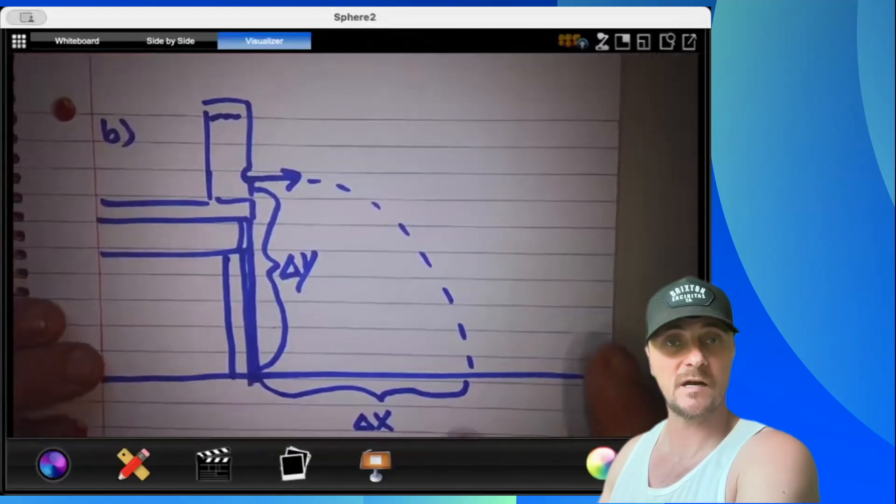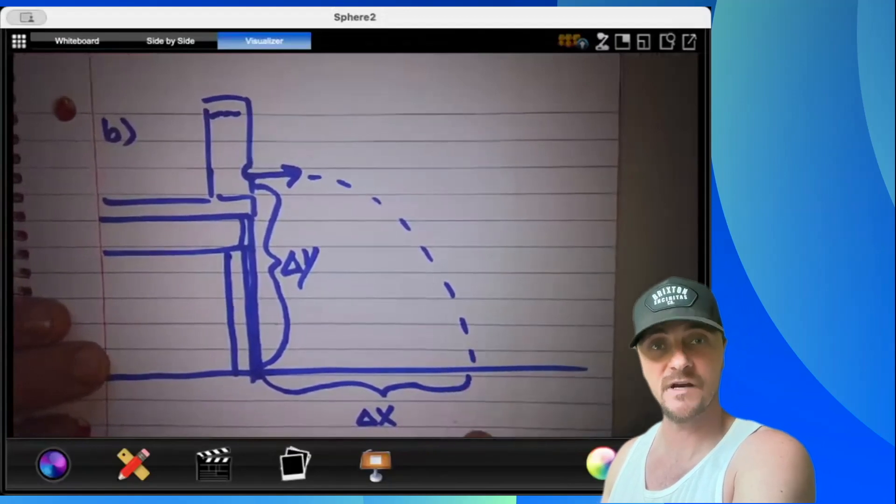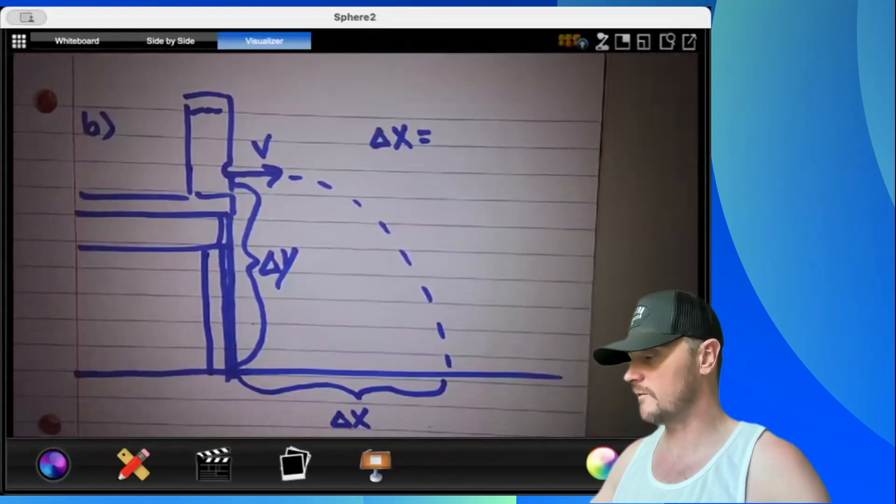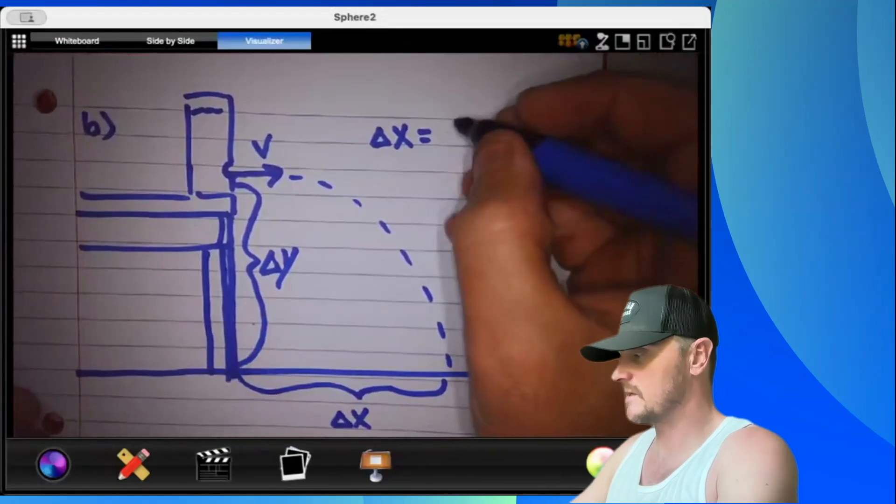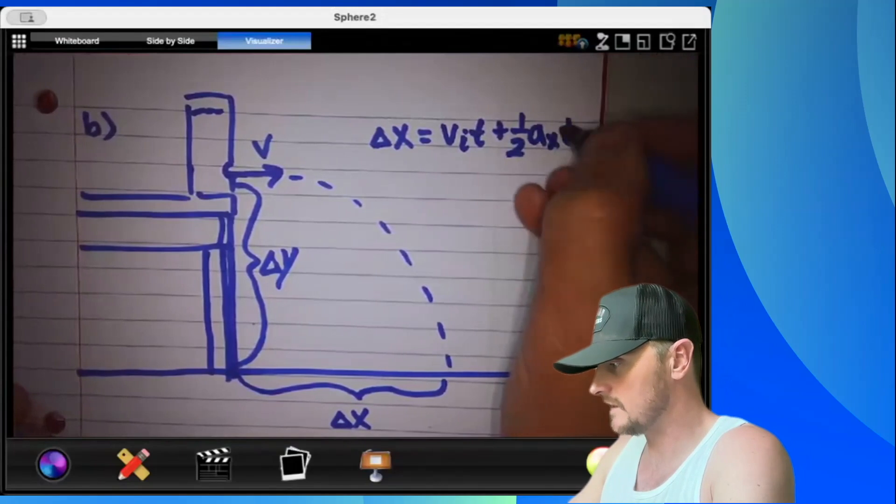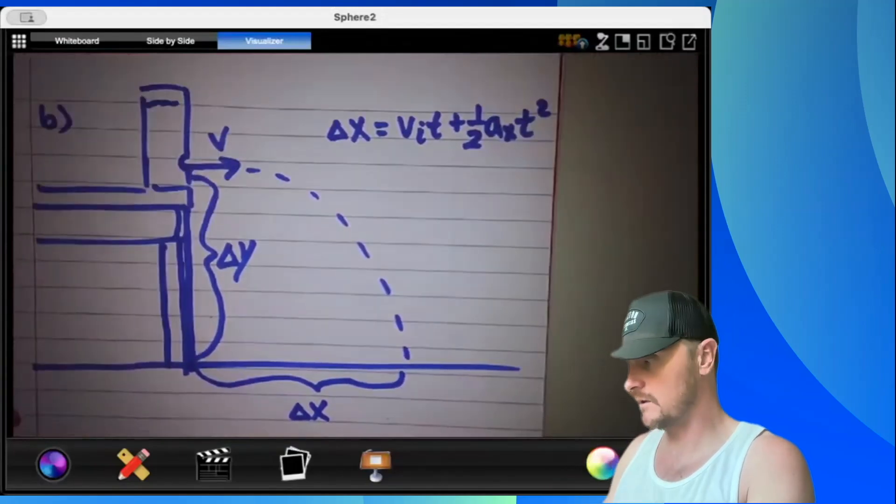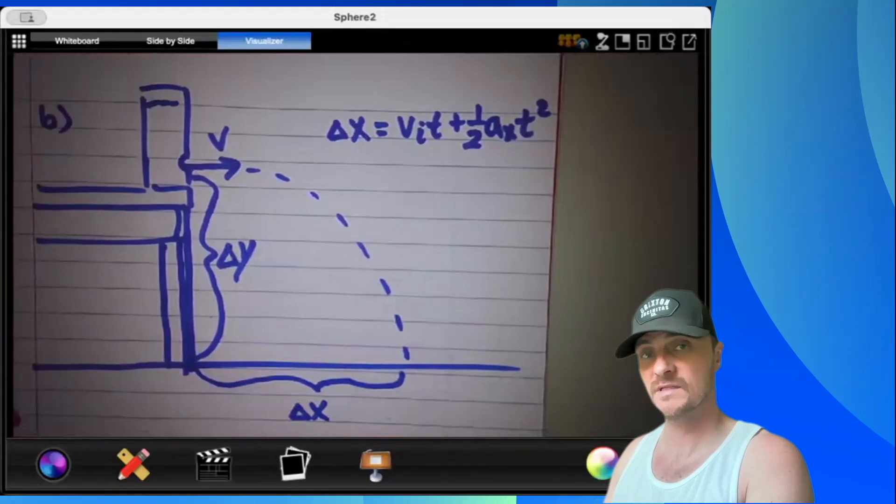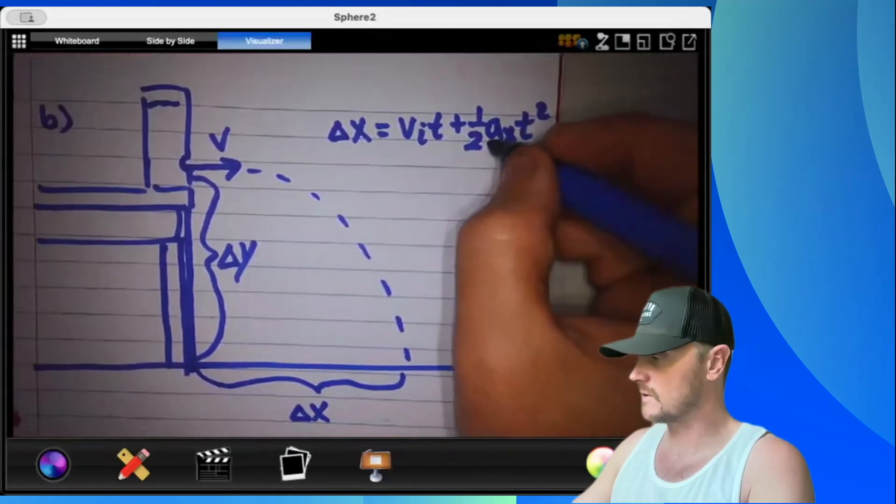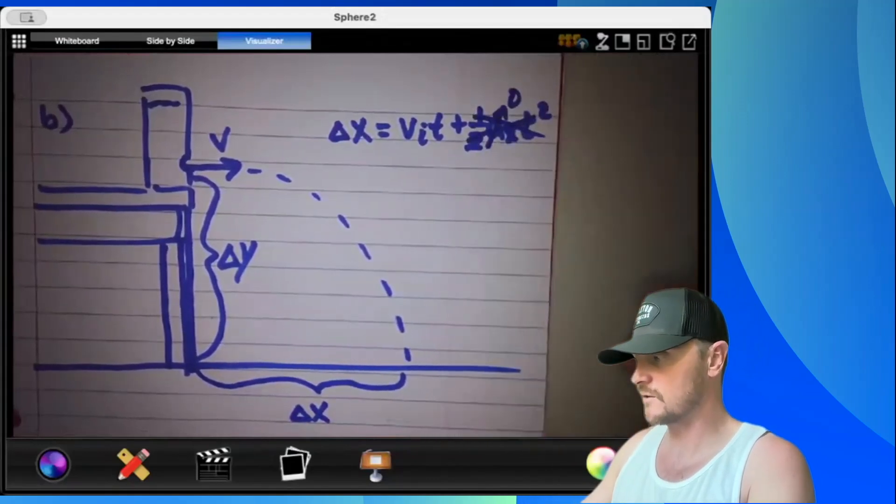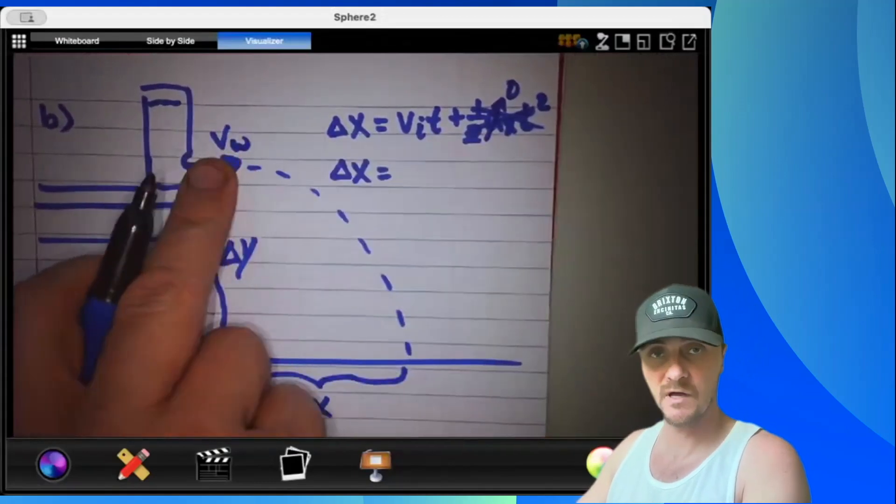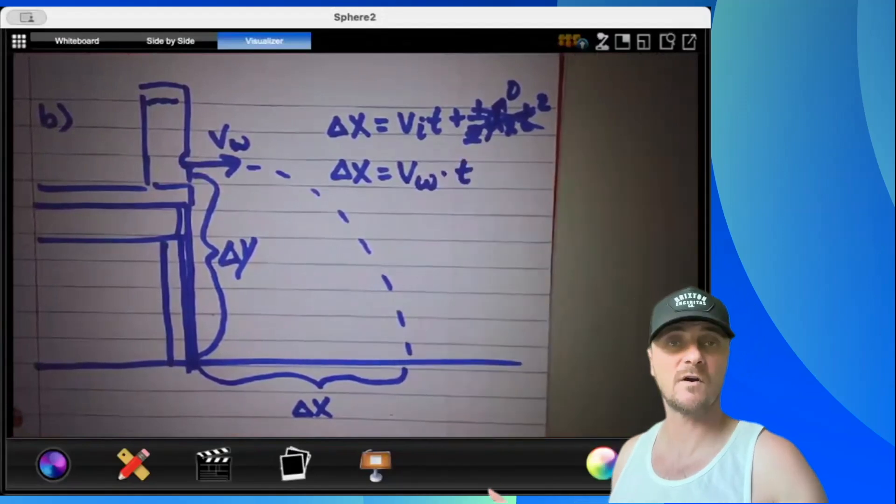First and foremost we're going to set up our equations for this projectile motion scenario. I know I have a kinematic equation that will apply both to the X axis and the Y axis. Delta X equals initial velocity times time plus one half A X T squared. At this point I know you know that in the X axis there is no acceleration.